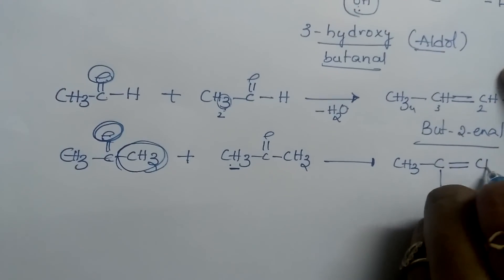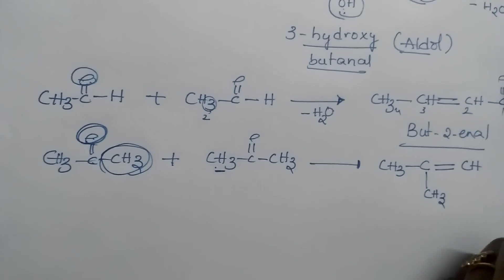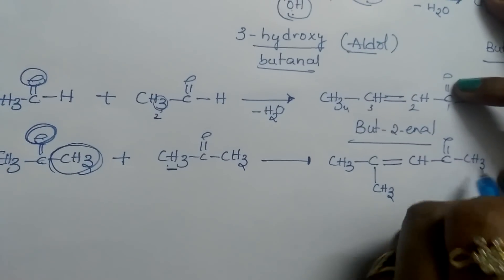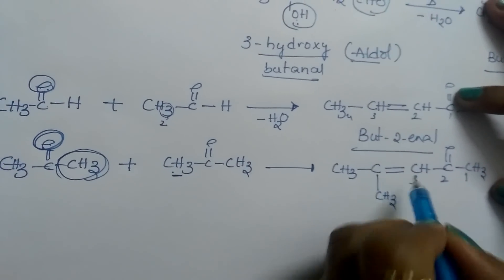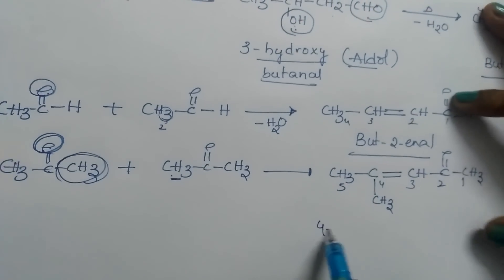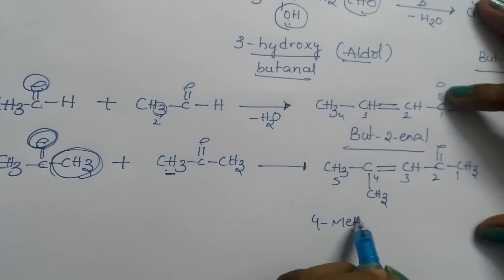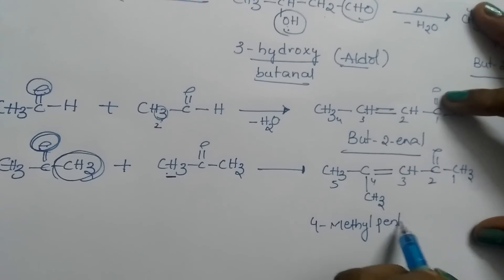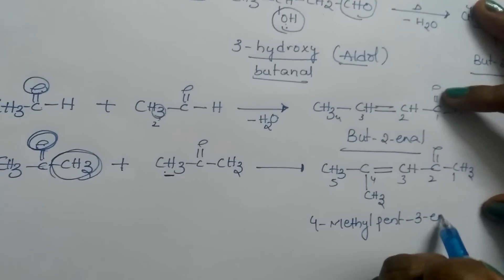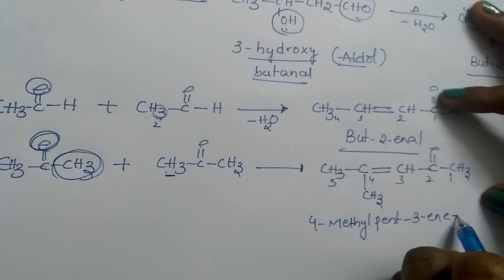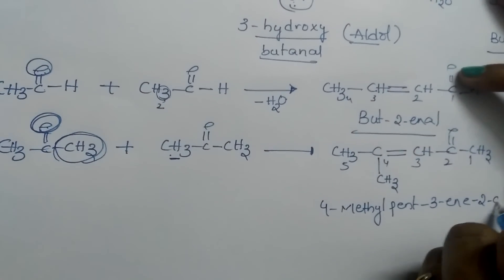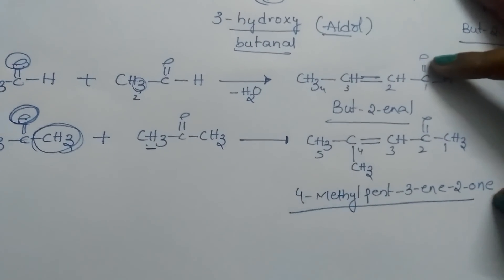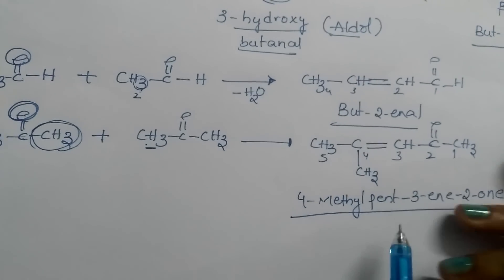Write that CH3 down. After removing 1 oxygen and 2 hydrogens, put a double bond. After removing the 2 hydrogens, 1 hydrogen is left on carbon — the rest is the same as before. The name of this product: at the 4th position there is a methyl group, total 5 carbons so 'pent', double bond at the 3rd position so '3-ene', and ketone at the 2nd position so '2-one'. The product is 4-methylpent-3-en-2-one.